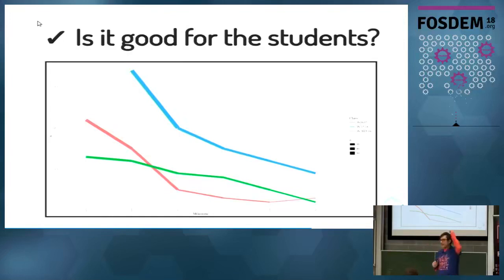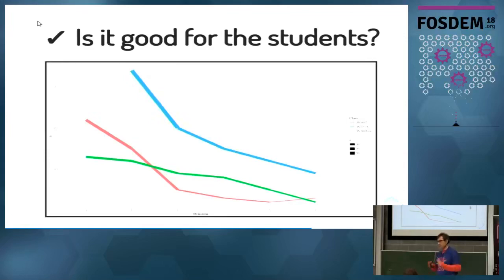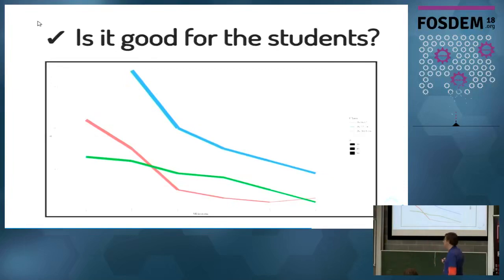This is a graph of the number of students who have actually turned in a milestone. Green is this year; blue and red are the two previous years. In a previous year I started with around 55 students and the number kept decaying across milestones — students were dropping out of the class. You can see the decaying rate was very steep.